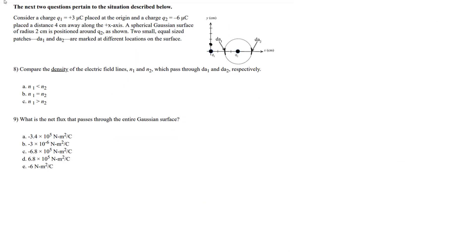This is the first problem. We have a charge Q1 at the origin and charge Q2 — one positive, one negative — placed four centimeters away. You have two small surfaces that are part of this dashed Gaussian surface, and they want to compare the density of field lines N1 and N2 passing through these tiny surfaces. A high density of field lines means the electric field is strong in that region — that's really what this question boils down to.